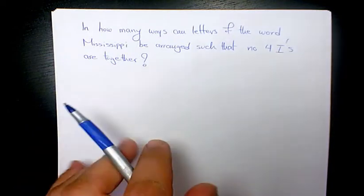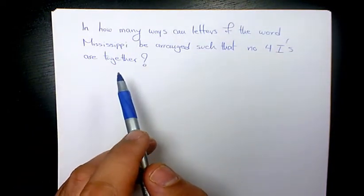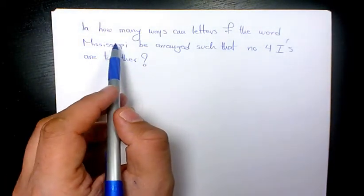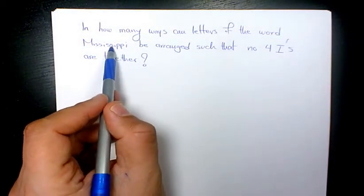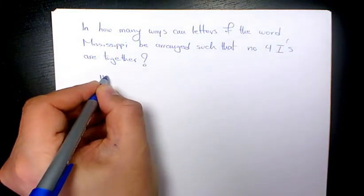So the first thing I want to do, first of all, I want to find out how many total ways to write Mississippi. So we count the number of letters: 1, 2, 3, 4, 5, 6, 7, 8, 9, 10, 11. So that's going to be 11 factorial.